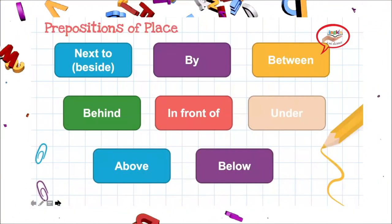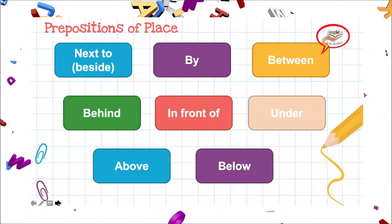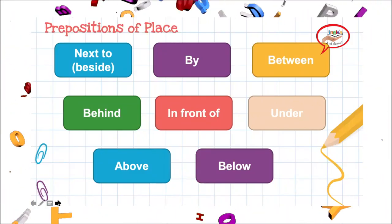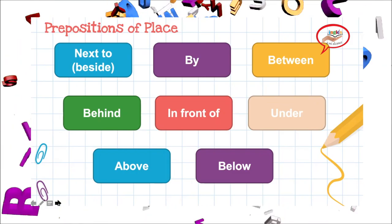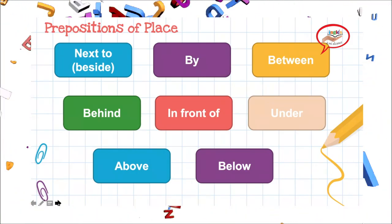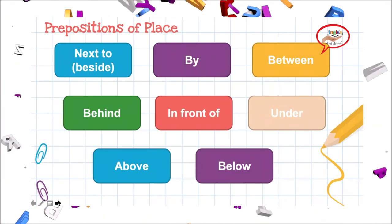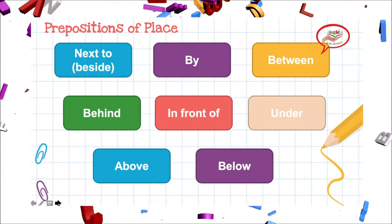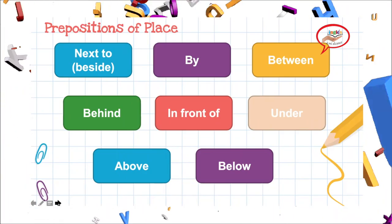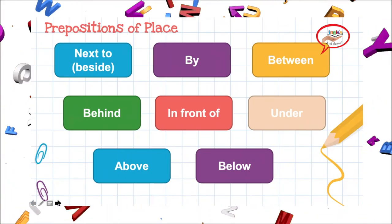Prepositions of place. Las preposiciones de espacio. Como puedes ver, tenemos muchas preposiciones de espacio. Entonces, vamos a comenzar primero cómo podemos pronunciarlas de la forma correcta. Comencemos. Let's start.